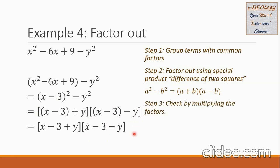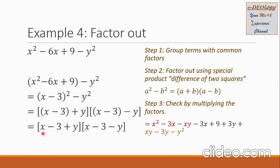Step 3: check by multiplying the factors. Taking one term each from each group and multiplying: x times x is x squared; x times negative 3 is negative 3x; x times negative y is negative xy. Next, negative 3 times x is negative 3x; negative 3 times negative 3 is positive 9; negative 3 times negative y is positive 3y. Then y times x is positive xy; y times negative 3 is negative 3y; y times negative y is negative y squared.